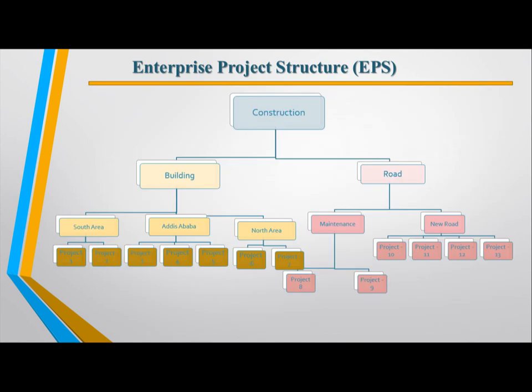Here is an example of a construction company. The construction company has buildings in the south area, north area, and roads. The maintenance of the road is built across both the south and north areas.